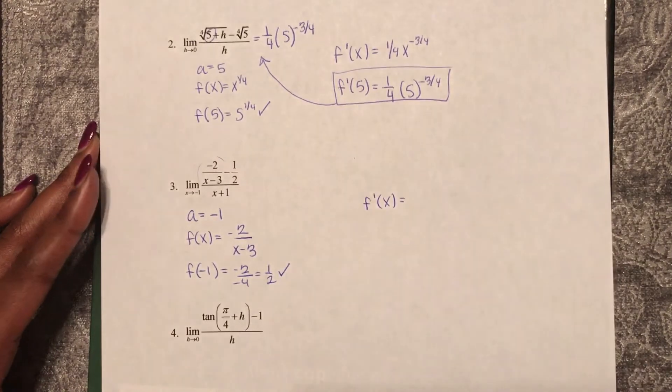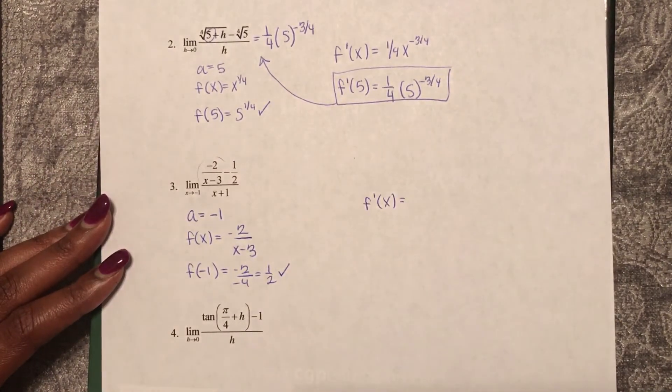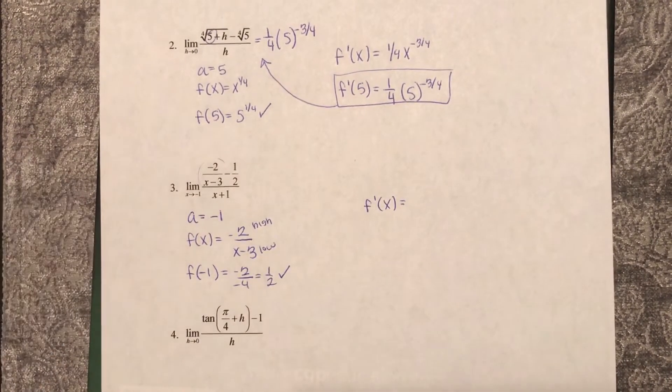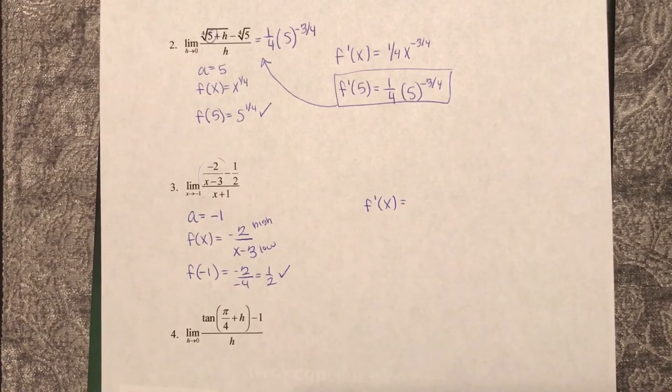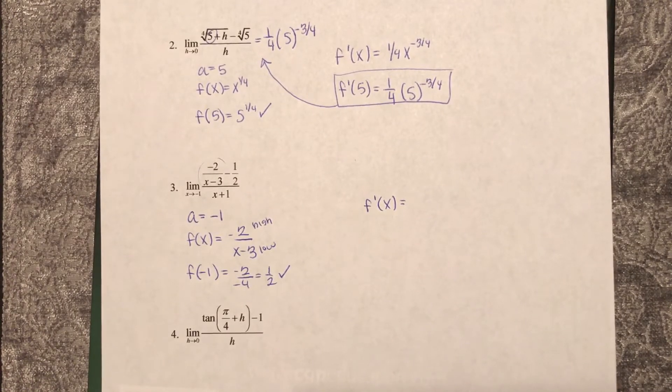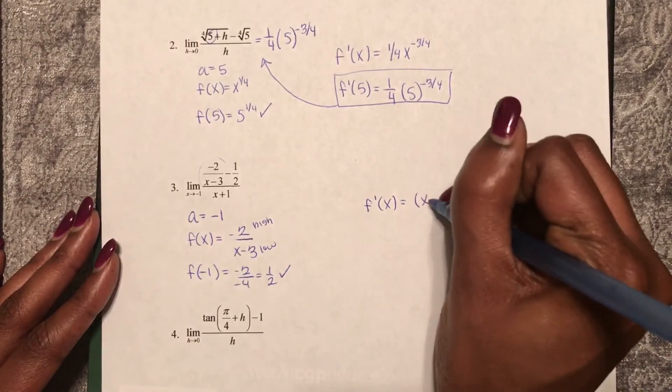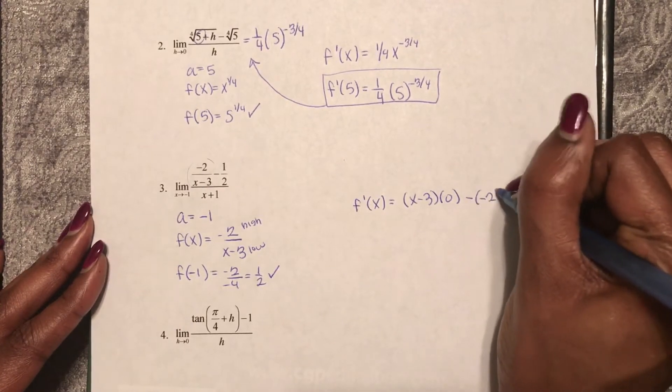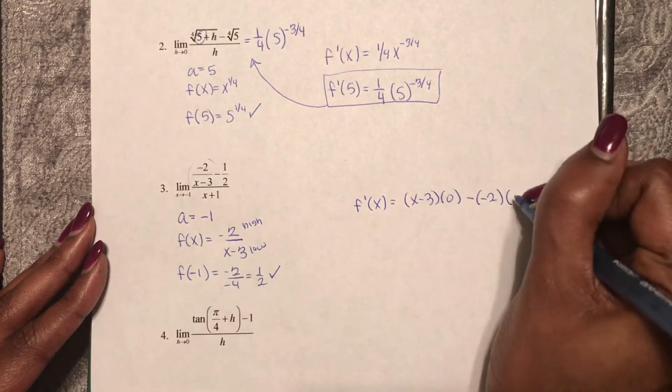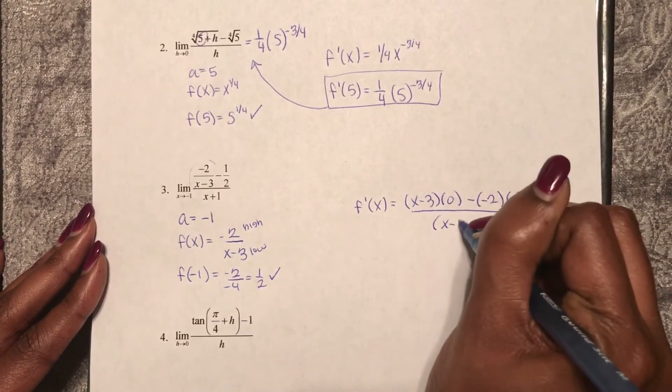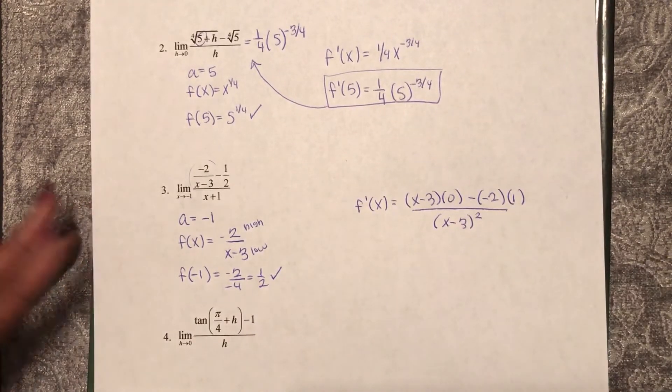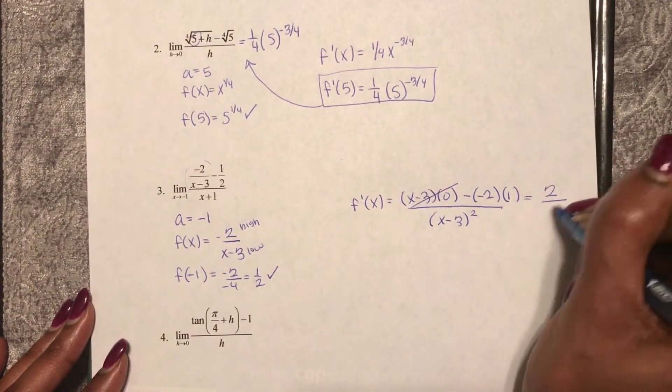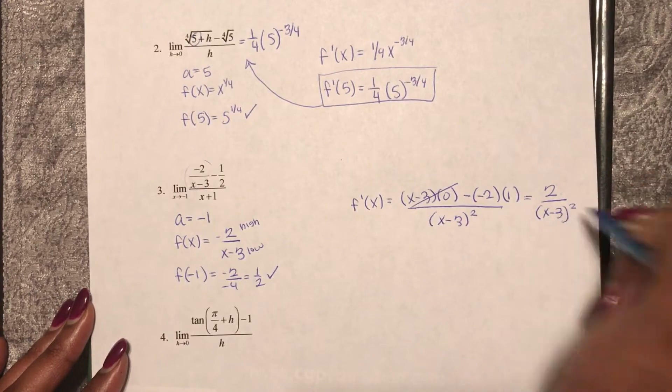f prime of x, I'm going to use the quotient rule. This is my high, this is my low. So doing the quotient rule, it's low d high, the derivative of a constant is 0, minus high d low, square the bottom, and away we go. So this first term goes to 0. So this is actually positive 2 over x minus 3 squared.